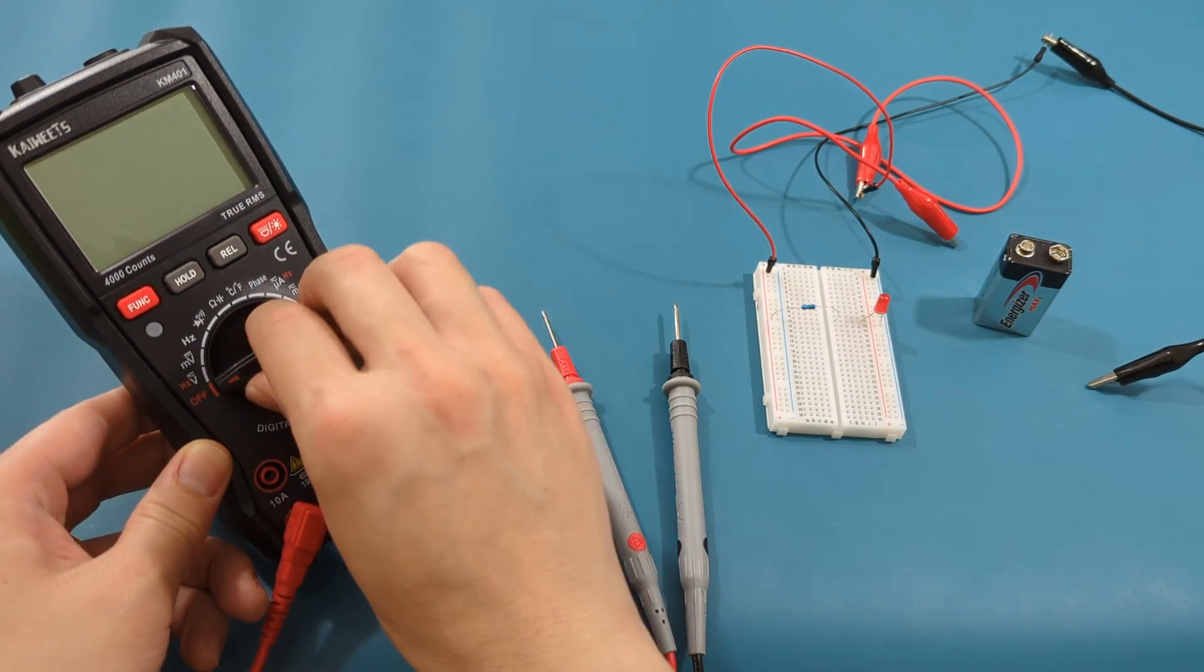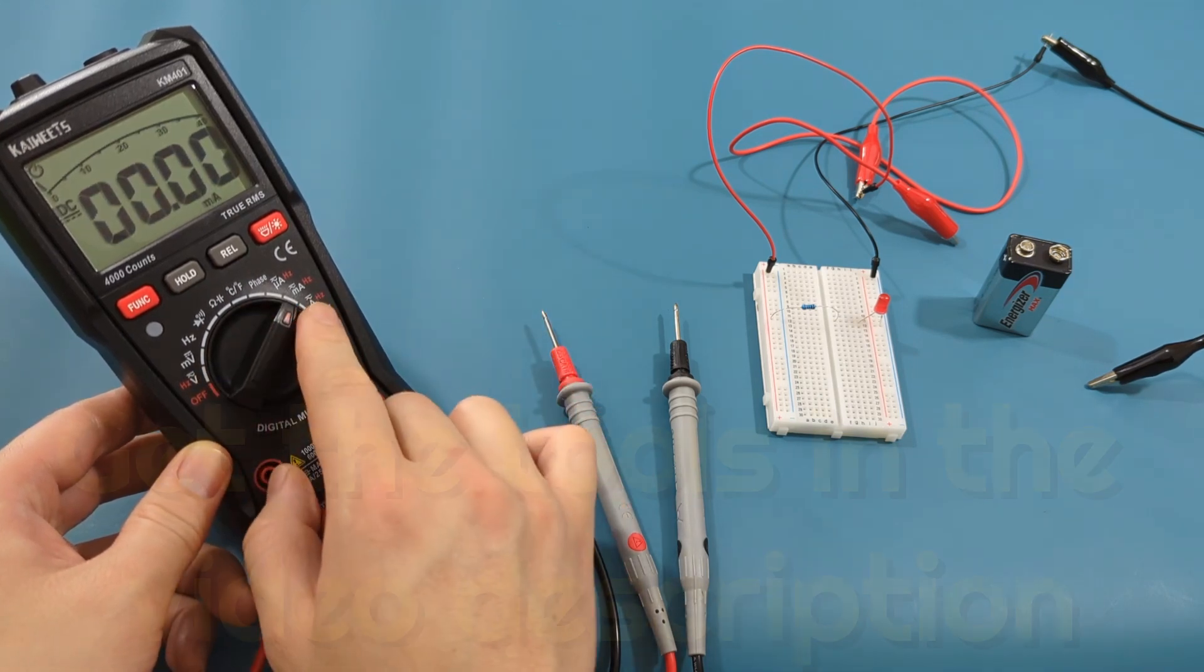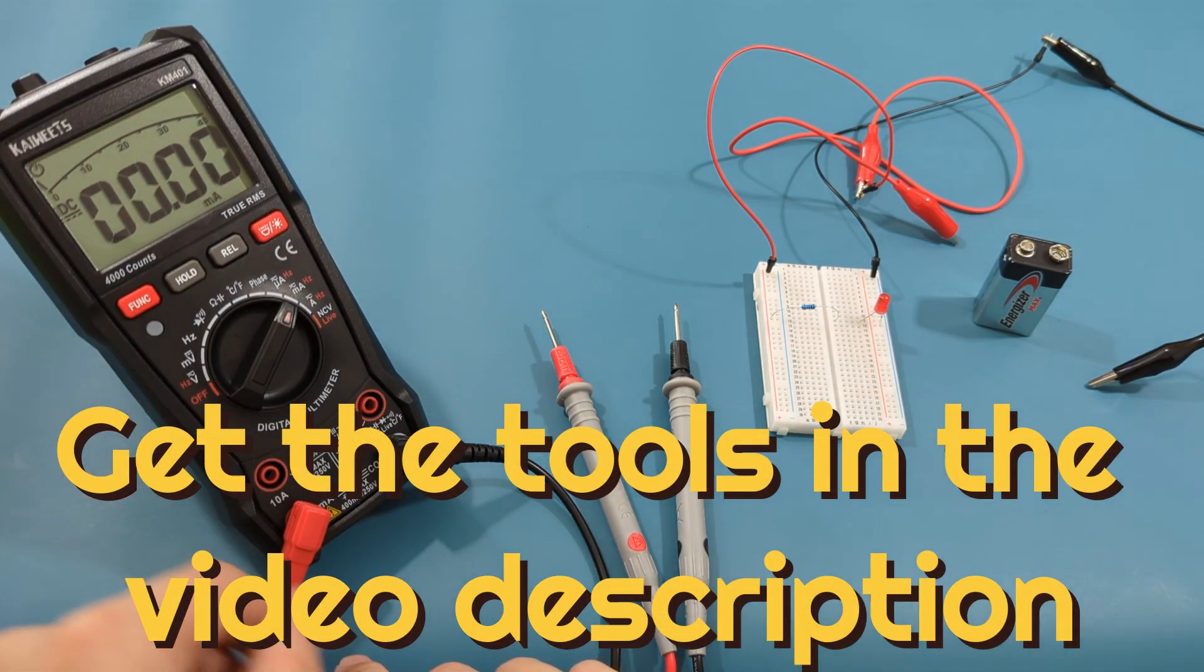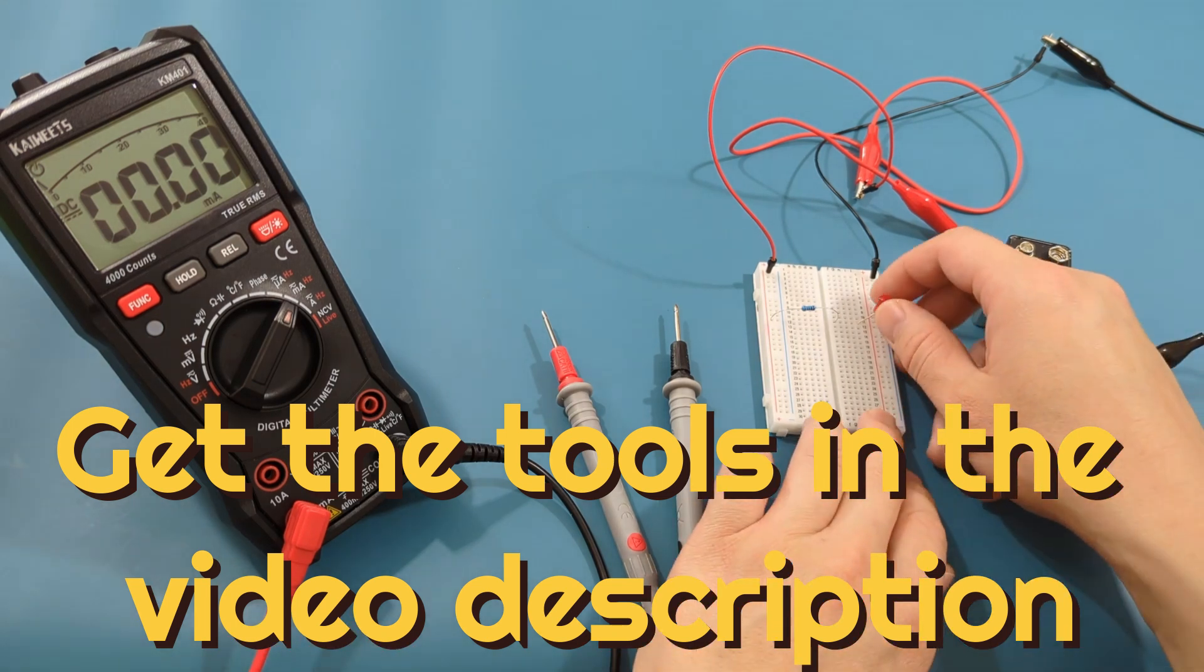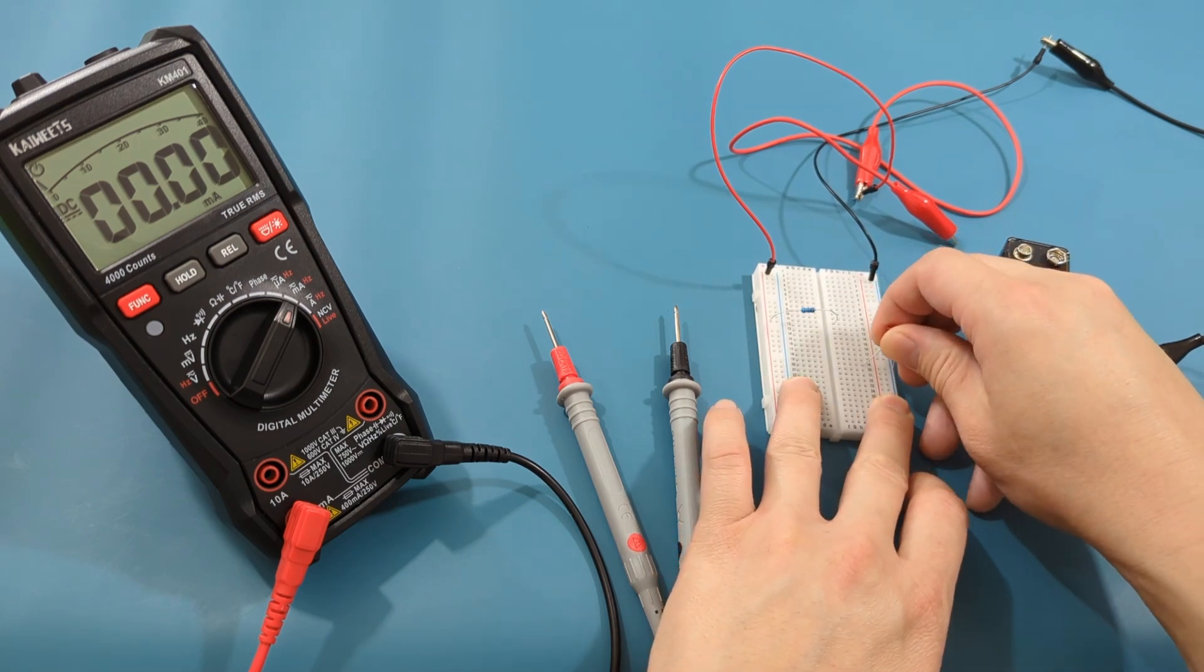Now turn the multimeter to the milliamperes setting. We will create an open loop by moving the LED diode a few rows down.